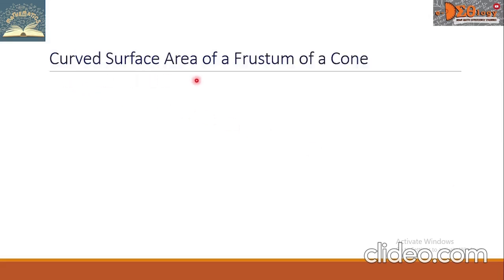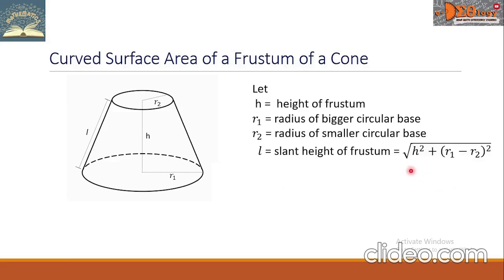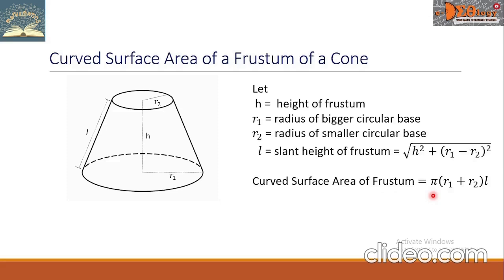For the curved surface area of a frustum: with H the height, R₁ the radius of the bigger base, R₂ the radius of the smaller base, and L the slant height. The slant height formula is L = √(H² + (R₁ − R₂)²). The curved surface area formula is π × (R₁ + R₂) × L.